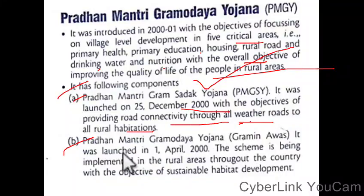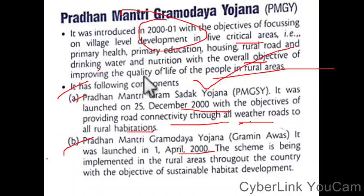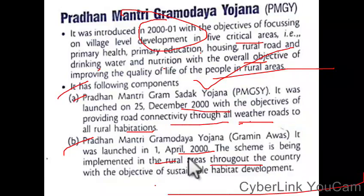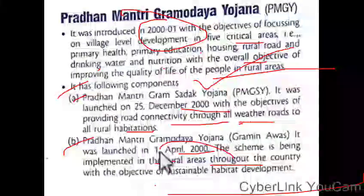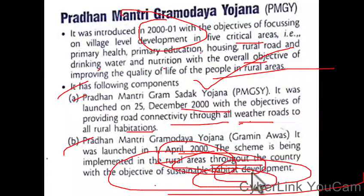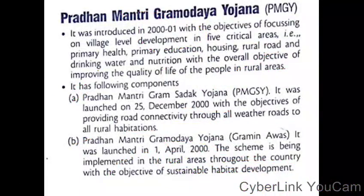Gramsha Mottri was launched in 2000 and is implemented in rural areas across the country. It is a sustainable habitat development initiative.